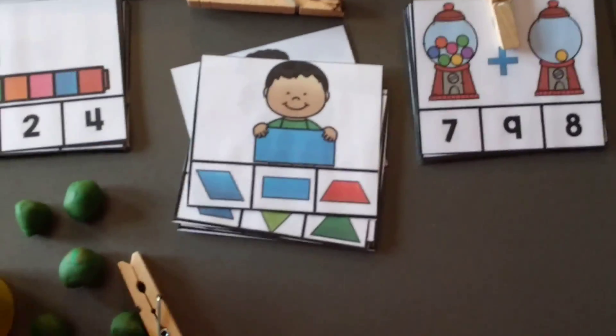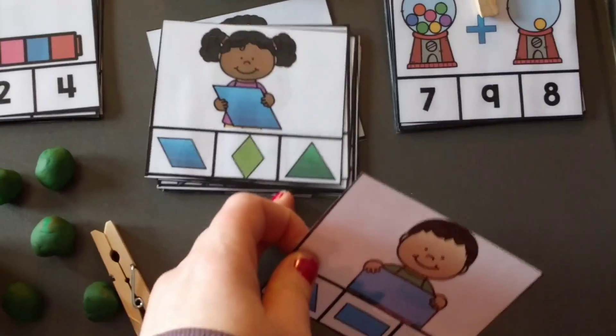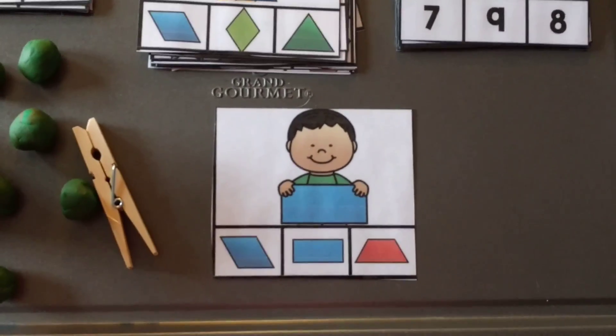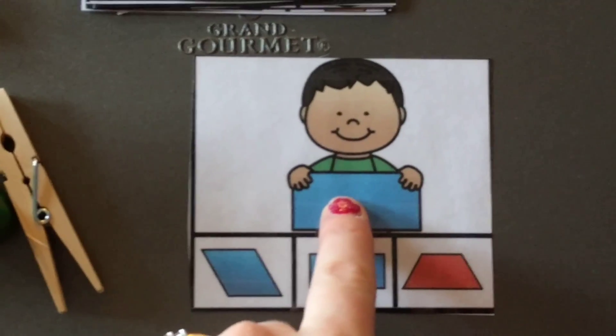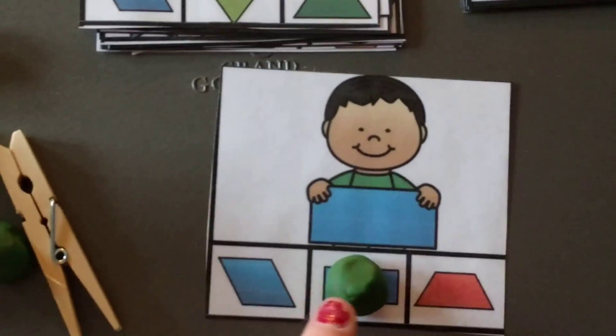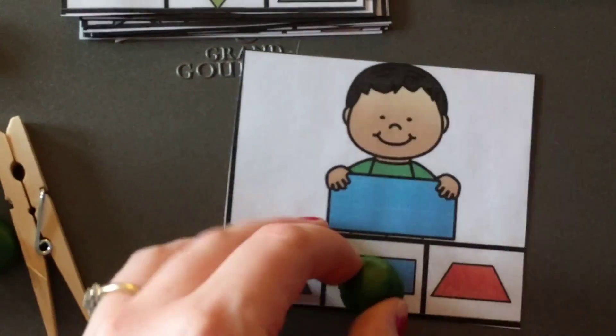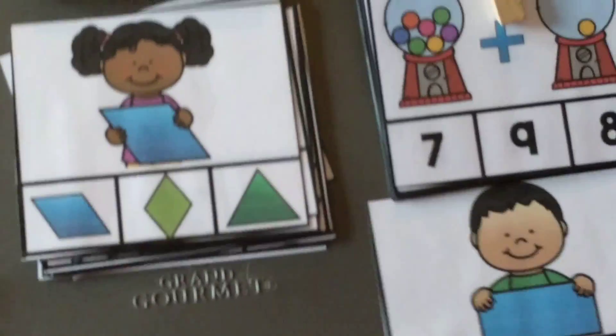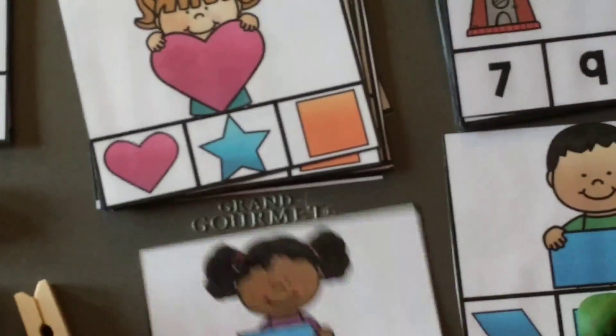So then the next type of cards that come in this set are shape cards. Now this should be easy for my preschooler. What I'm going to have him do is basically he just has to find the shape. So what shape is he holding? And he's going to look down here, and he's going to cover up this shape, and then I'm going to say rectangle.